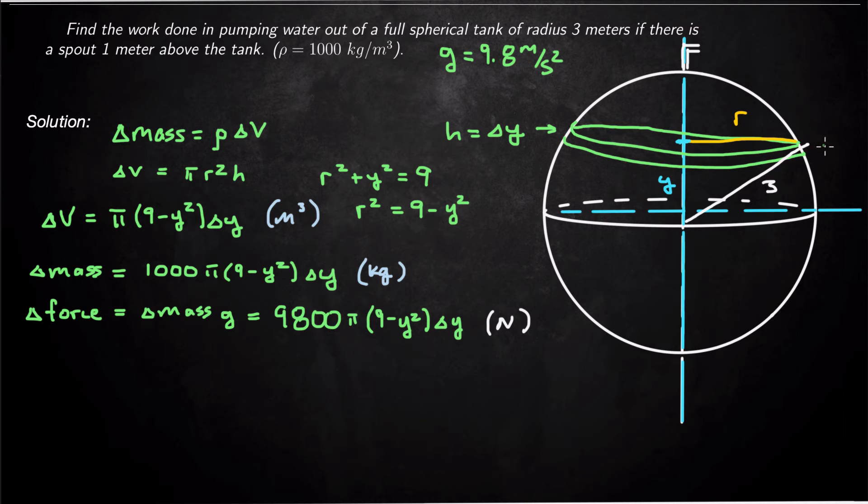And now I've got to figure out how far is this going to travel to get out of the tank. Well, it's going to travel from where it is right here at y all the way up to y equals 4. So it's got to travel from where it is all the way up to 4. So that distance, this distance right here, is a distance of 4 minus y. So the distance that this sheet of water has to travel to get out to the top of the tank is 4 - y. So because there's a spout one meter above the tank, we do 4 - y. If we're just somehow able to go out of the top of the tank, we would do 3 - y. But there's a spout one meter above the top of the tank.